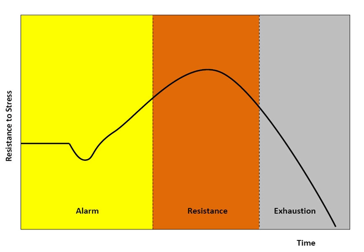Exhaustion is the alternative third stage in the GAS model. At this point, all of the body's resources are eventually depleted and the body is unable to maintain normal function. The initial autonomic nervous system symptoms may reappear, such as sweating and raised heart rate. If stage 3 is extended, long-term damage may result. Prolonged vasoconstriction results in ischemia which in turn leads to cell necrosis, as the body's immune system becomes exhausted and bodily functions become impaired, resulting in decompensation.